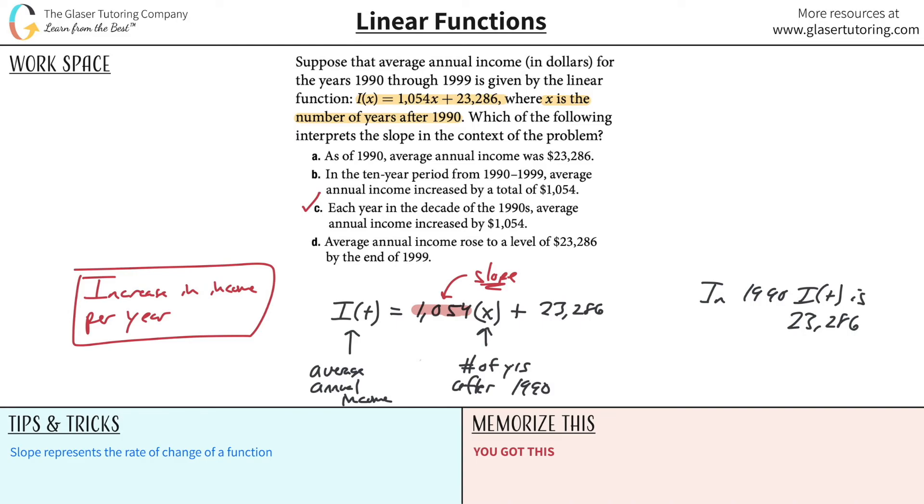And then here it says average annual income rose to a level of $23,286 by the end of 19... No, no, no. We said it started at that. So that's pretty clear.